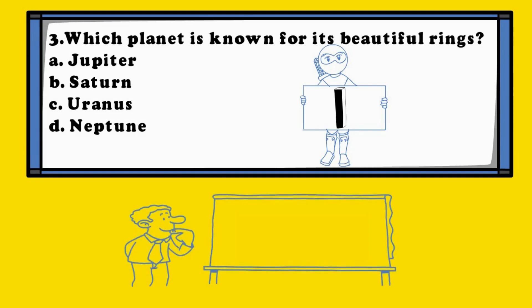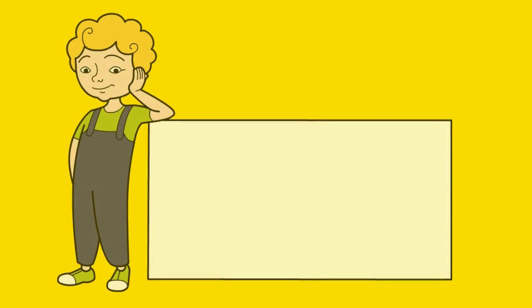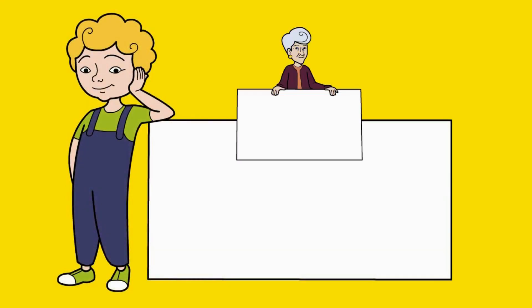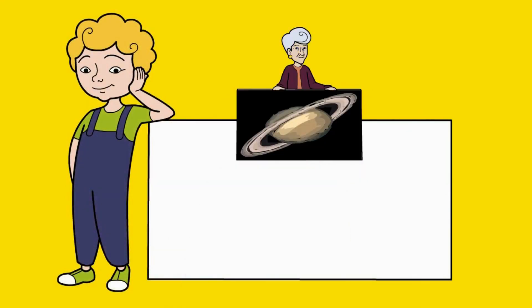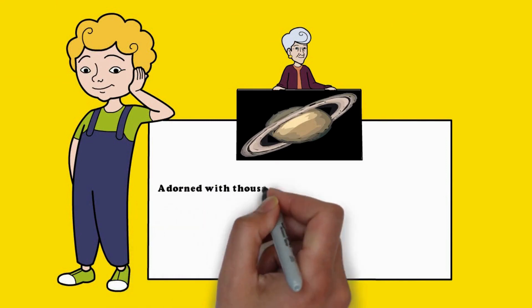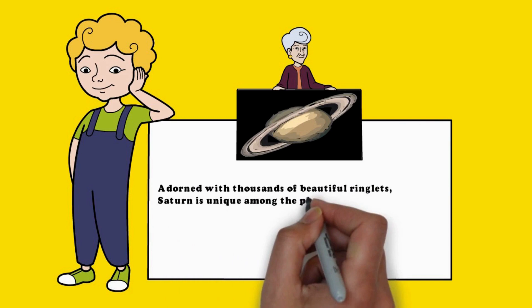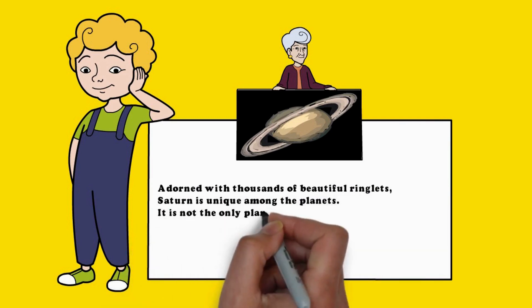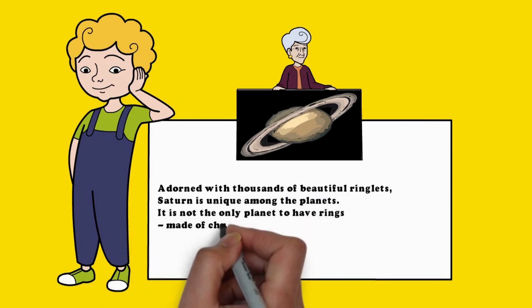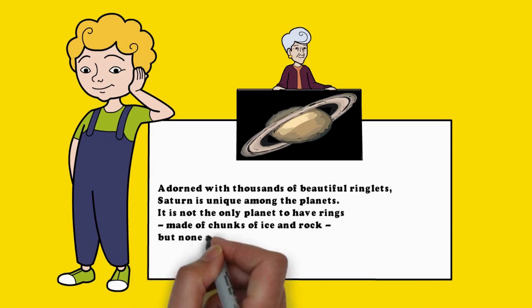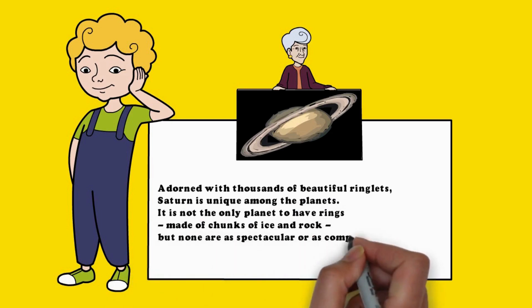The answer is B. Saturn. Adorned with thousands of beautiful ringlets, Saturn is unique among the planets. It is not the only planet to have rings, made of chunks of ice and rock, but none are as spectacular or as complicated as Saturn's.